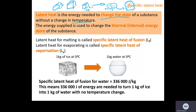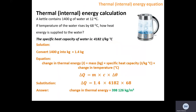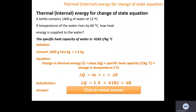Latent heat for melting is called the specific latent heat of fusion, and latent heat for evaporating is called the specific latent heat of vaporisation. The specific latent heat of fusion for water is 336,000 joules per kilogram. This means it takes exactly 336,000 joules of energy to turn one kilogram of ice at zero degrees Celsius into one kilogram of water at zero degrees Celsius. Specific latent heat is the amount of energy required to change the state of one kilogram of a substance without changing its temperature.